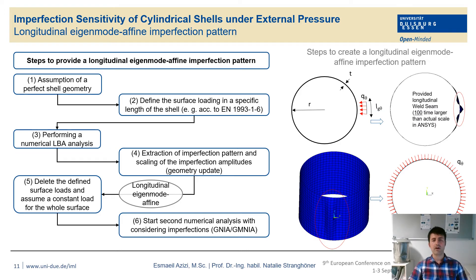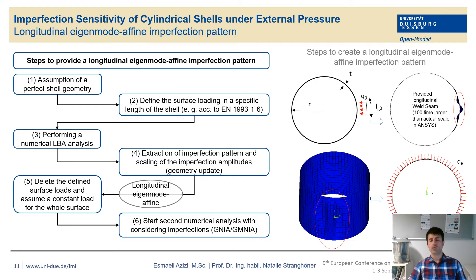Six steps are needed to provide the longitudinal eigenmode-affine imperfection pattern. First, we assume that the shell geometry is perfect. Then we apply a specific load equal to the external pressure along a specific length of the cylinder. After that, an LBA analysis is performed to obtain the deformed geometry. After obtaining this deformed geometry, the surface load is removed, and then the external pressure is defined. Then the second type of analysis, which is GNA or GMNA, is performed.